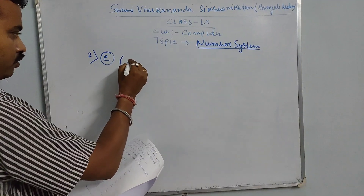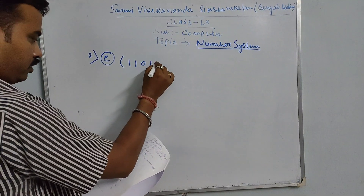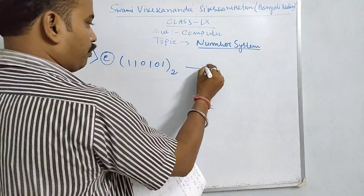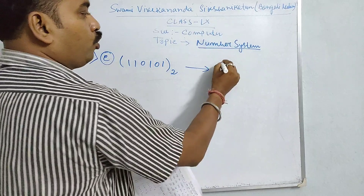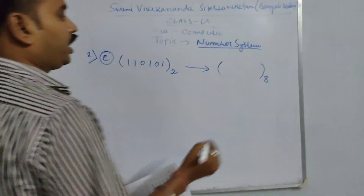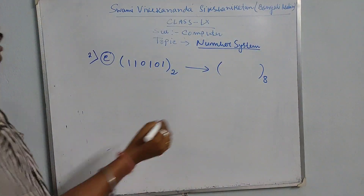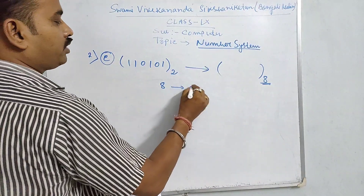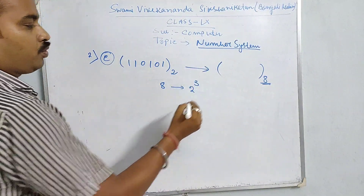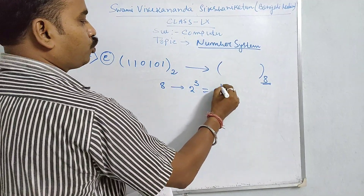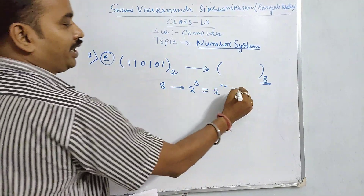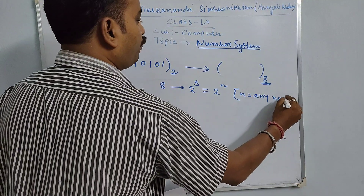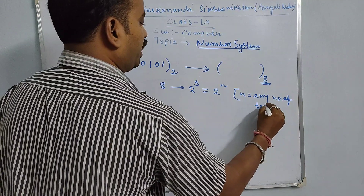In question number two E, the problem given is 1101011. How to convert a binary number to an octal number? In that particular case, in the octal number, the base is eight, and we know that eight means two to the power three, so you can write it as two to the power N, any number of terms.